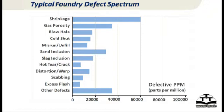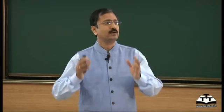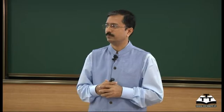Looking at PPM across a typical spectrum of jobbing, ductile iron, and steel foundries: shrinkage accounts for around sixty thousand PPM rejections — about six percent. Then gas porosity and blowholes from gas not venting properly, cold shut and misrun from incomplete filling, inclusions of sand and slag, cracks and distortion from cooling, plus defects like scabbing and flash. Overall you are looking at something like ten percent rejections. Even mechanized foundries report ten to fifteen percent, and that is bad news.